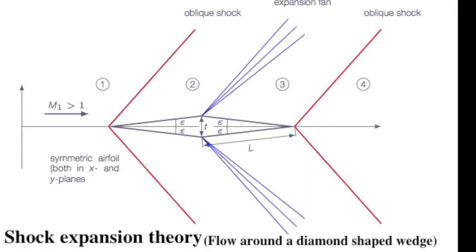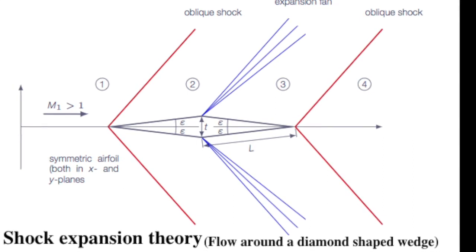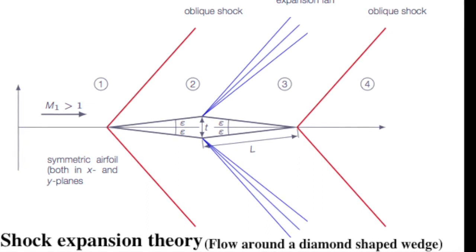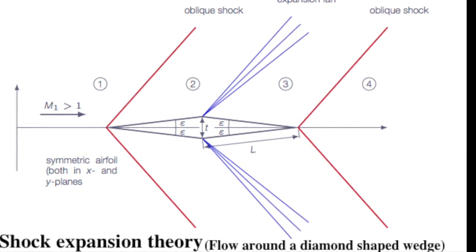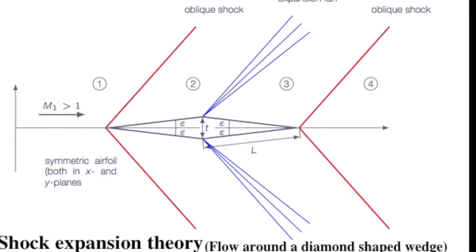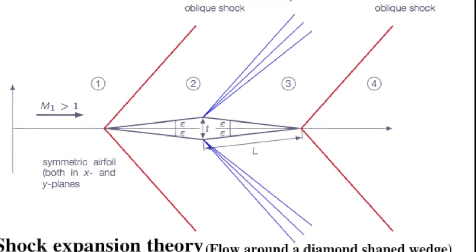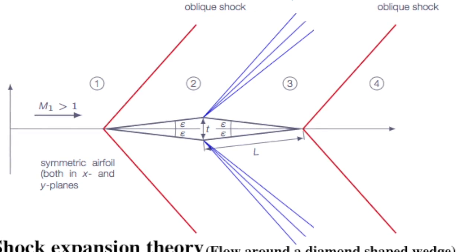For example, consider the symmetrical diamond-shaped airfoil at zero angle of attack. The supersonic flow is first compressed and deflected through the angle E by an oblique shock wave at the leading edge.